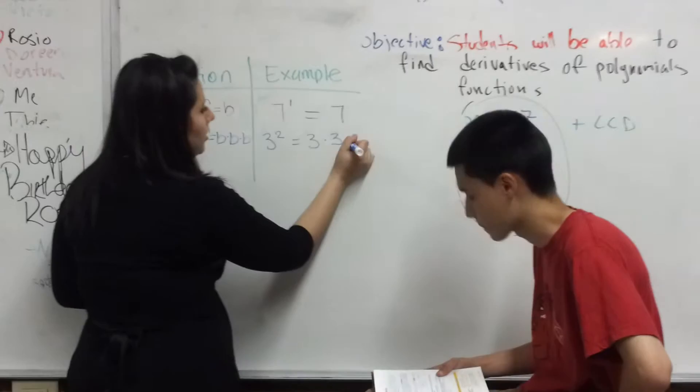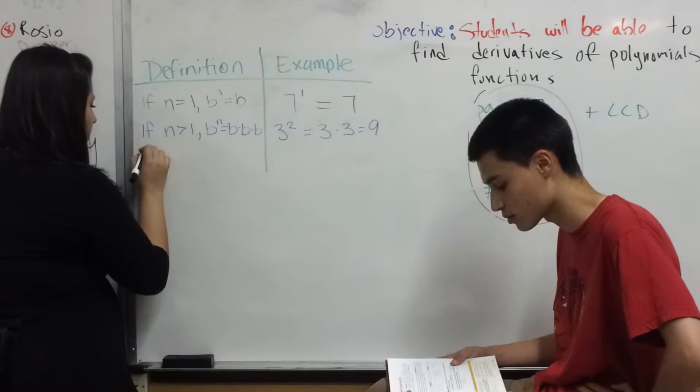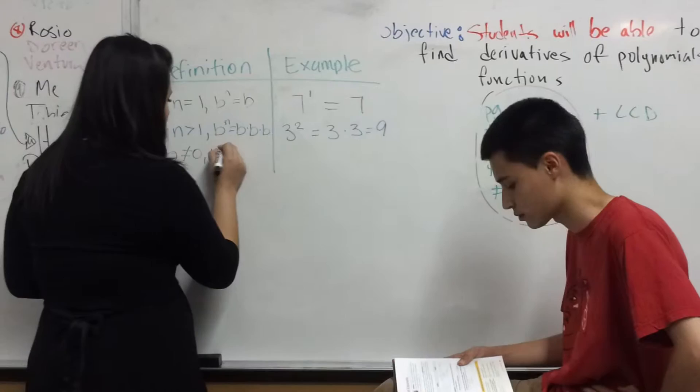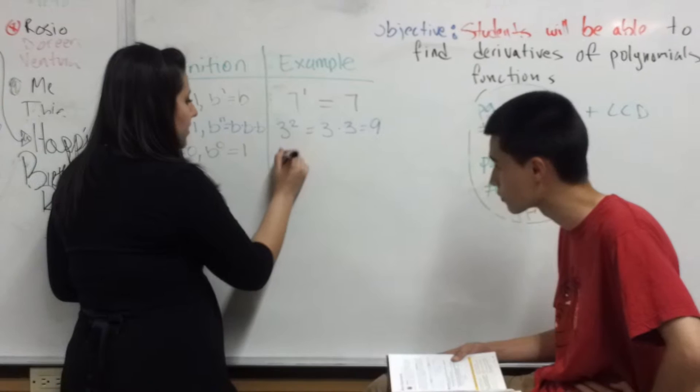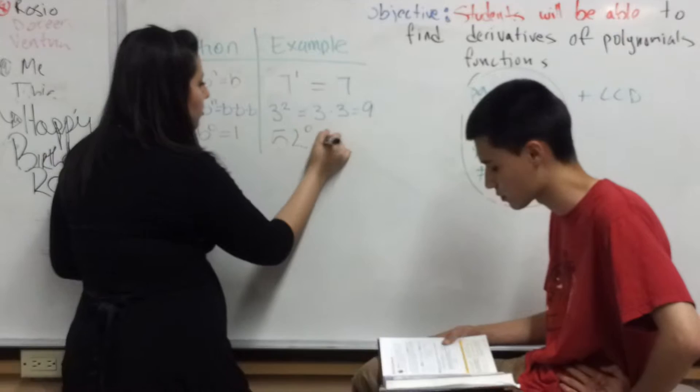And the next definition is, if b cannot equal 0, then b to the 0 equals 1. For example, 52 to the 0 power equals 1. The next definition is,